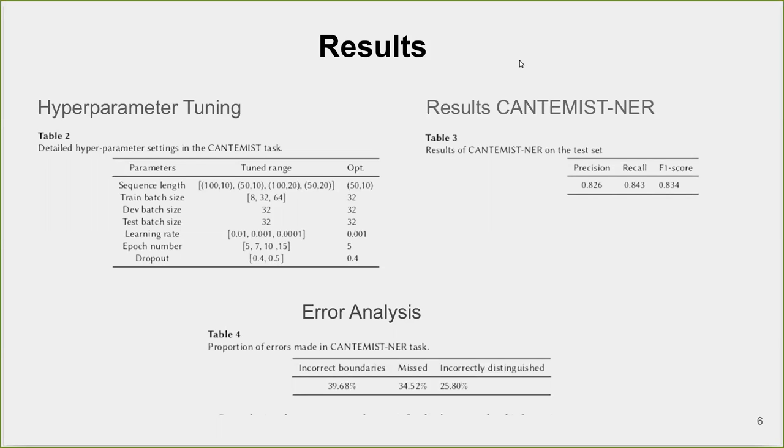In Table 4, we detail the proportion of errors made by our system in the predictions of the test set in the CANTEMIST-NER task.